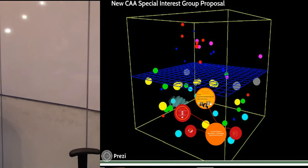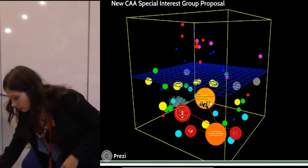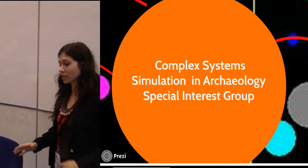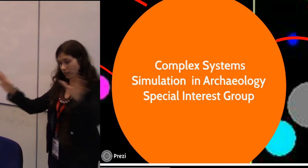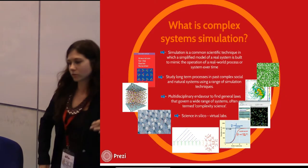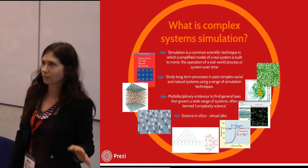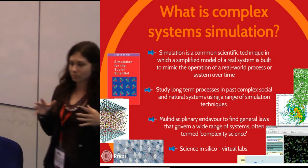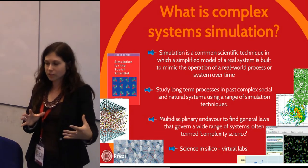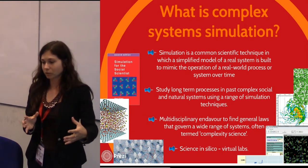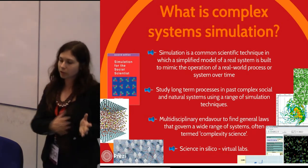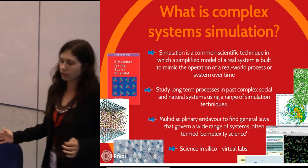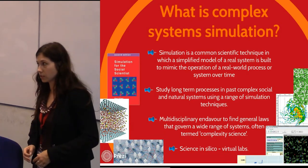We are proposing a new CAA Special Interest Group in complex system simulation and archaeology. In very simple terms, complex system simulation means using simulation — a specific scientific technique in which we build simplified models of what we think the past system looked like, and then run them over time. It's not a static model; it's a dynamic model that may change and evolve, showing us specific insight into the past or modern systems.